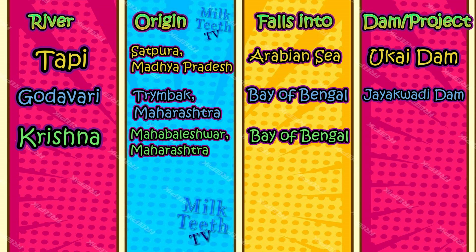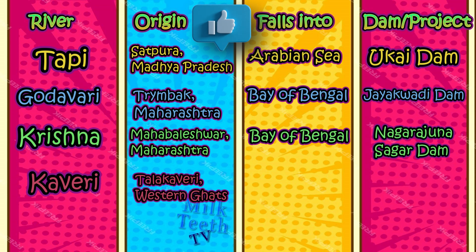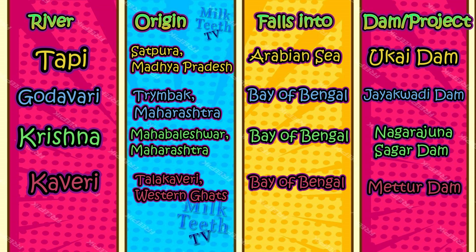Krishna: the River Krishna originates from Mahabaleshwar in Maharashtra and falls into the Bay of Bengal. The famous Nagarjuna Sagar Dam is constructed over the River Krishna. Kaveri originates from Talakaveri in the Western Ghats and drains into the Bay of Bengal. The famous Mettur Dam is constructed over the River Kaveri.